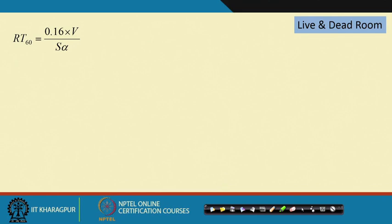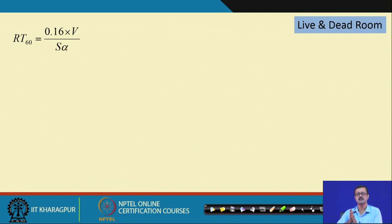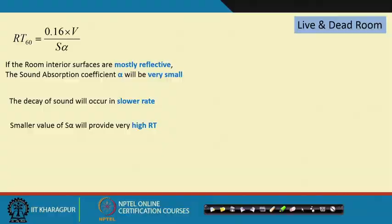We also calculate RT30 — the time for a 30 dB drop — and RT10 for an initial 10 dB drop, useful for finer corrections in auditorium electroacoustics. In general, writing RT implies RT60 by the basic definition. Now let us discuss how to relate reverberation time to the concepts of live and dead rooms.